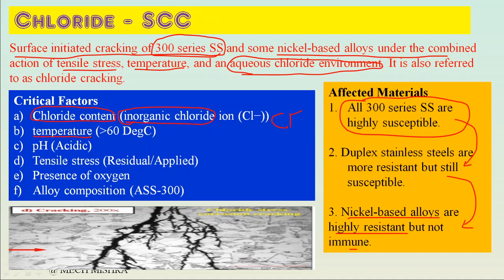The second critical factor is temperature. When temperature increases, the probability of CLSCC also increases. CLSCC is more prominent at 60°C and above, but it can also occur at lower temperatures depending on other factors. The third critical factor is pH - acidic pH values are more prone to CLSCC.